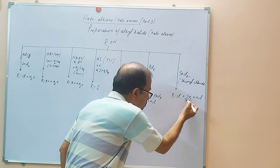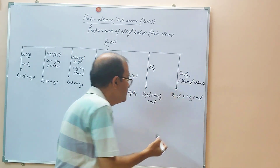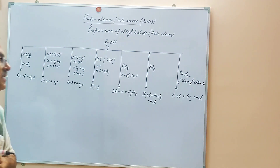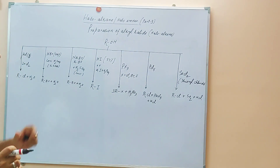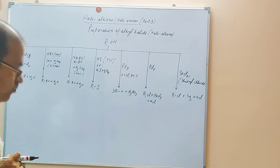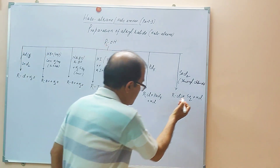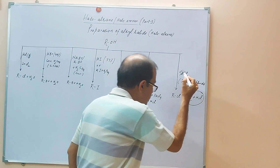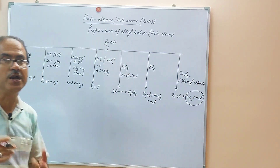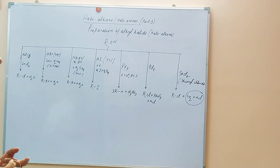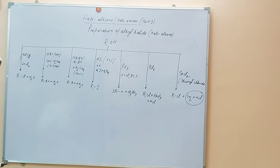This is how you can prepare the alkyl halides in a more pure form. Because both these substrates — HCl and SO2 — are gases, they are released. So when they vaporize, naturally pure RCl will remain.